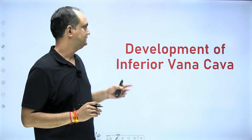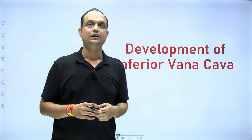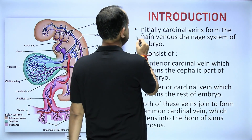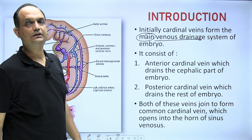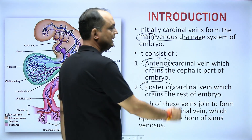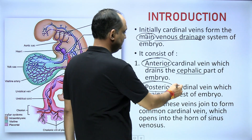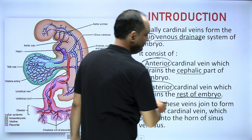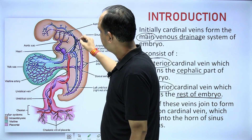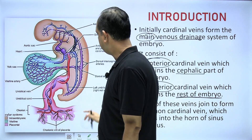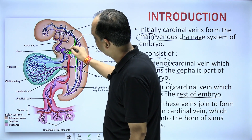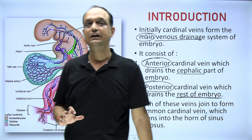In today's video we will discuss the development of inferior vena cava. Initially there are cardinal veins, which are the main venous drainage of the embryo. The cardinal vein consists of the anterior cardinal vein and the posterior cardinal vein. The anterior cardinal vein drains the cephalic part of the embryo, while the posterior cardinal vein drains the rest. These two veins fuse together to form the common cardinal vein, which drains into the respective horn of sinus venosus.